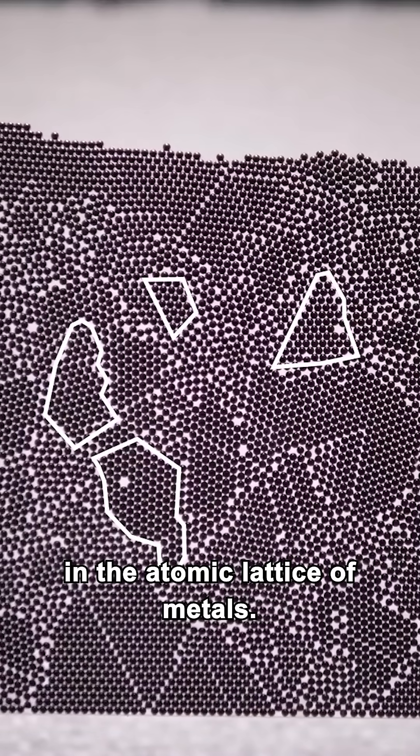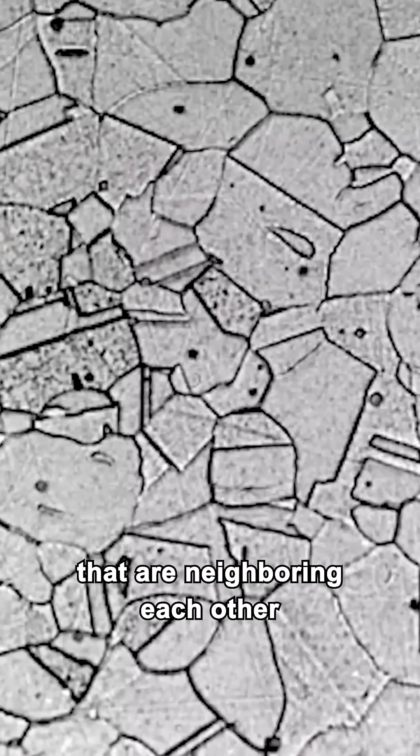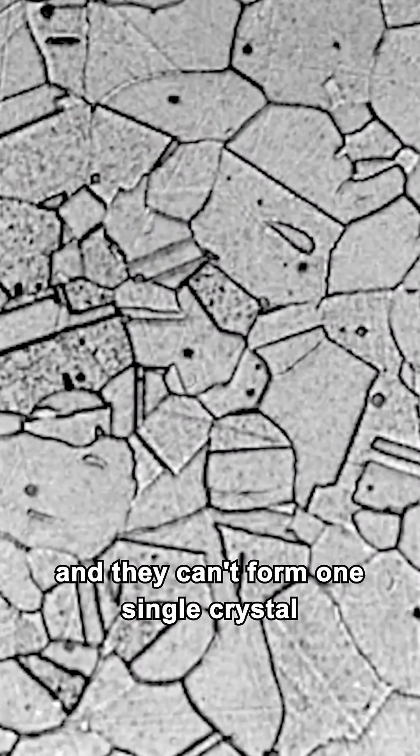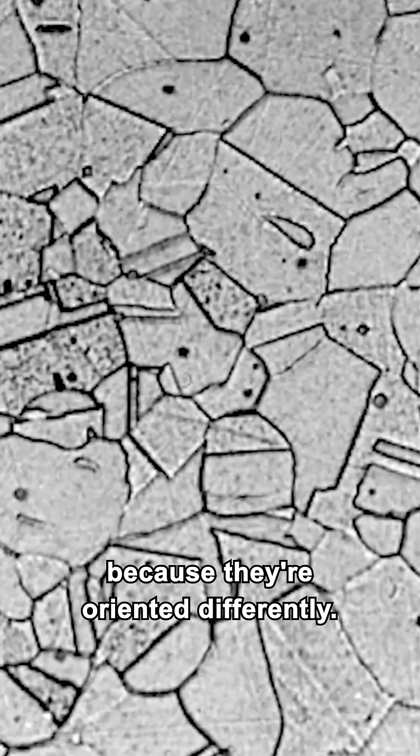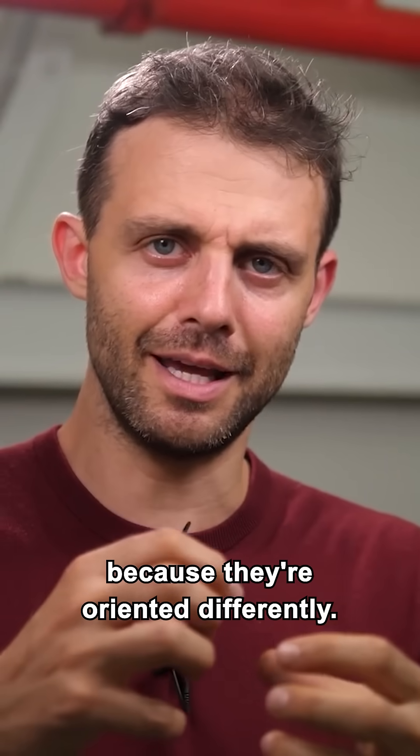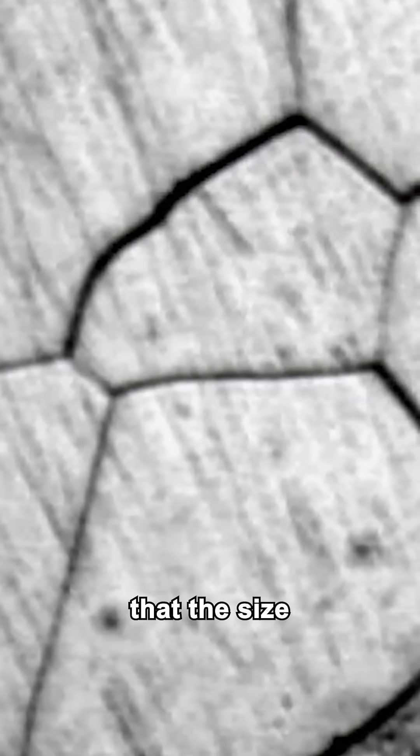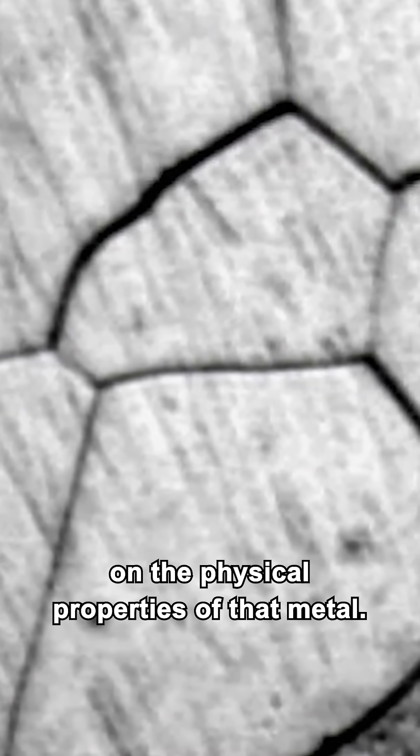You get the same kind of arrangement in the atomic lattice of metals that are neighboring each other. And they can't form one single crystal because they're oriented differently. These regions are called grains. And it turns out that the size really has a profound effect on the physical properties of that metal.